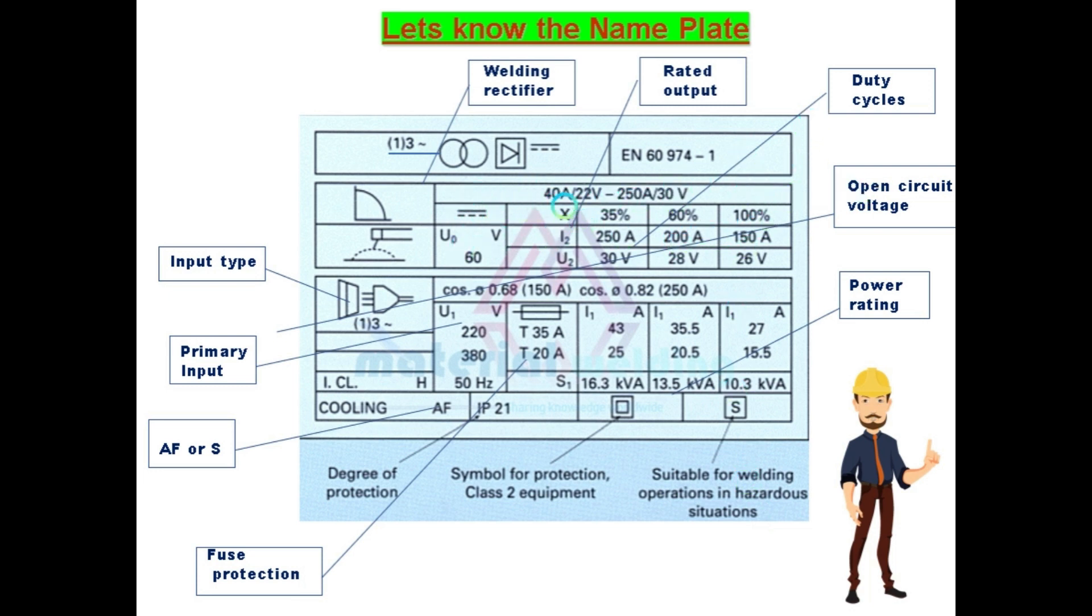This welding power source will give minimum 40 ampere and 22 volts, and a maximum of 250 ampere and 30 volt output. The open circuit voltage is 60 volt for this power source.